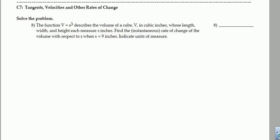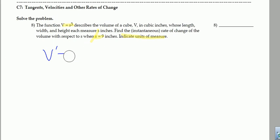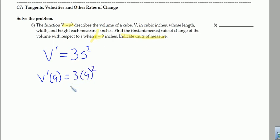Number 8: we're told that V equals S cubed describes the volume of a cube, measured in cubic inches, whose length, width, and height are measured S inches. Find the instantaneous rate of change of the volume with respect to S when S equals 9, and indicate units of measure. Since we're looking for instantaneous rate of change, we're looking for a derivative. V prime, the derivative of V, is 3S squared. When S is 9, V prime of 9 equals 3 times 9 squared, or 81 times 3.